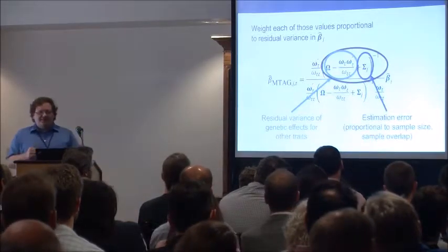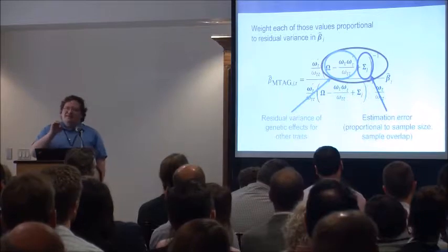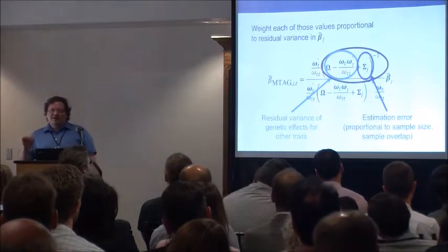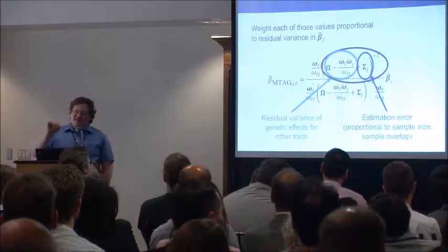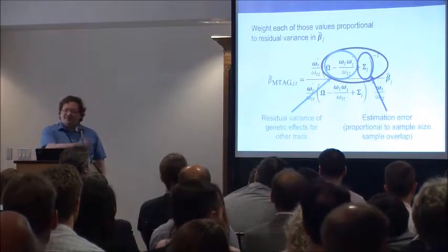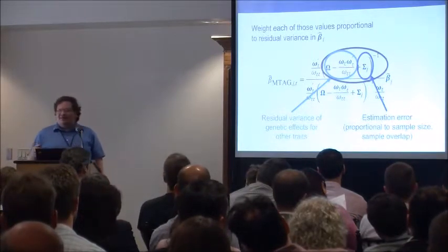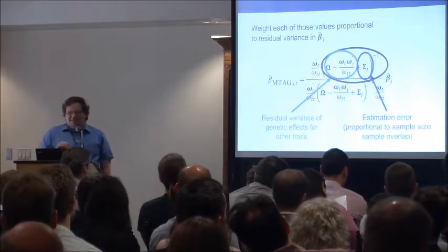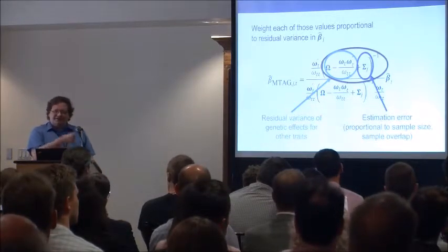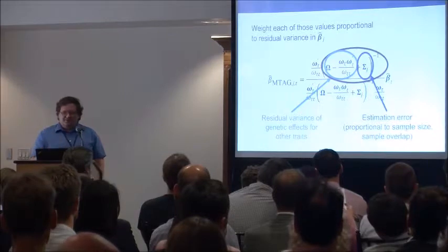The weighting component essentially finds the residual variance in the beta sub J's to use as weights, similar to inverse variance weighted meta-analysis. Specifically, we take the full amount of genetic variation in the betas co-varying across traits, then remove the piece related to our target trait T. What remains is the residual genetic effects that aren't in trait T but are in the other traits plugged into MTAG — that other genetic variance is essentially noise and adds residual variance we don't want to give additional weight. To that residual genetic effect we add the standard estimation error, allowing for potential sample overlap in that matrix.